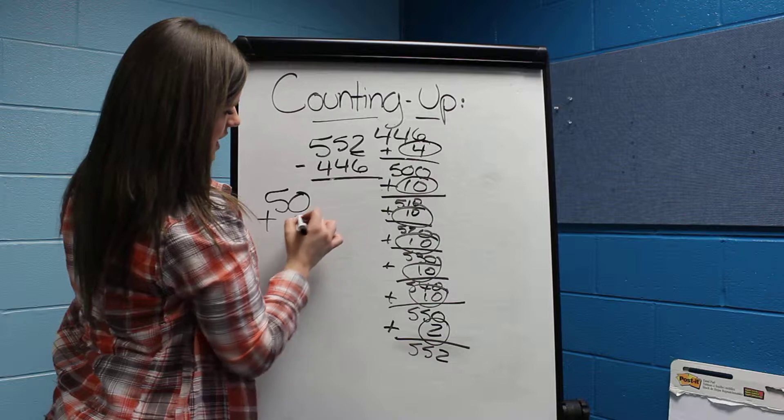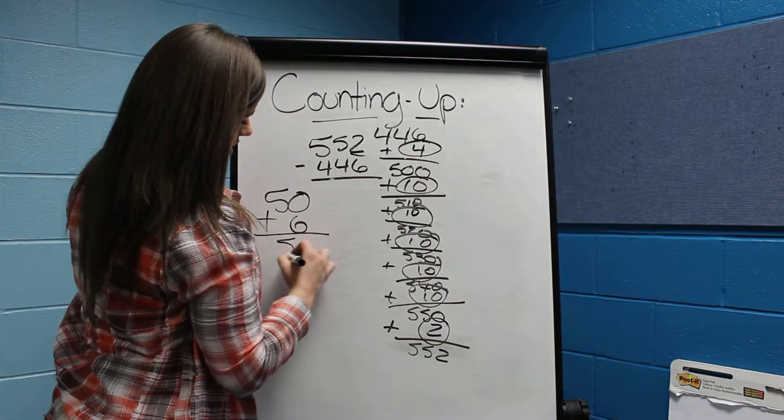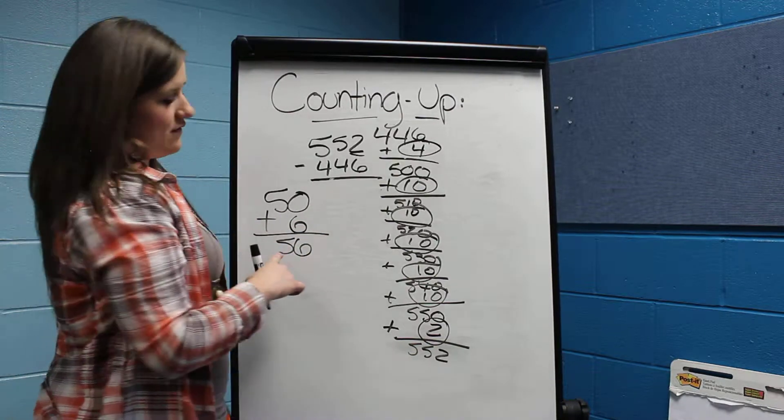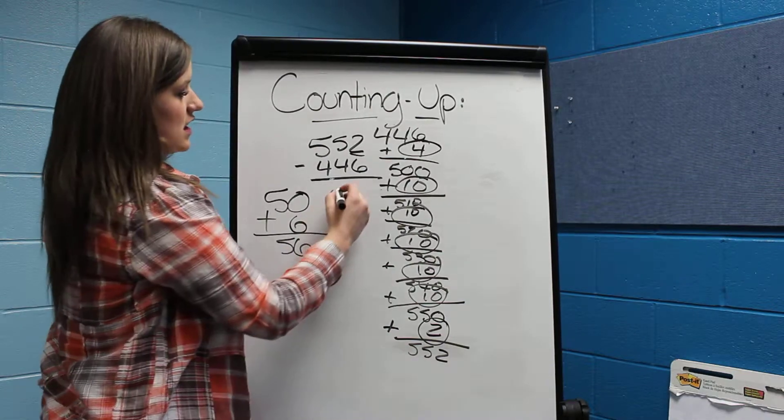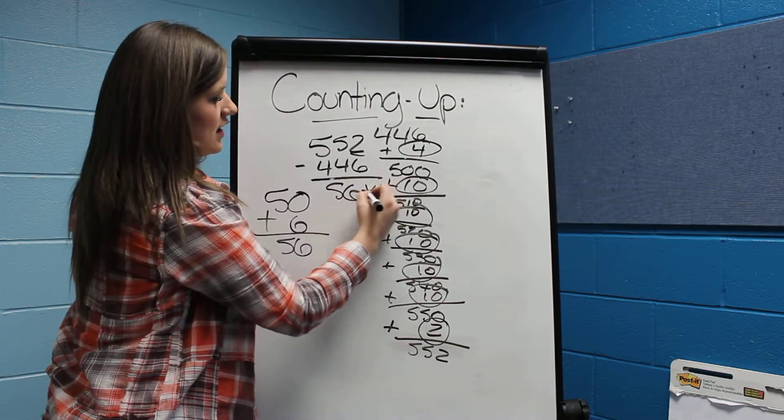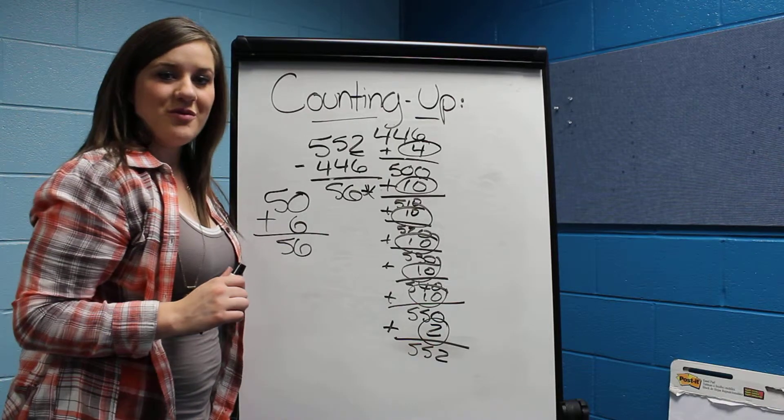And the 2 is going to give 6, so that answer is going to be 56. So that is how the counting up strategy works.